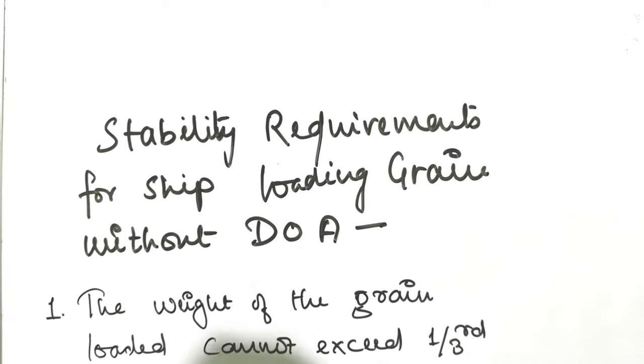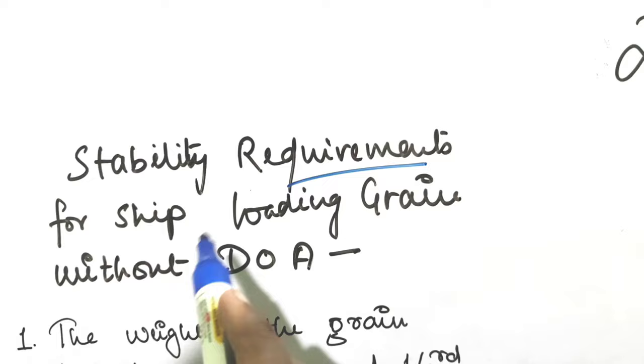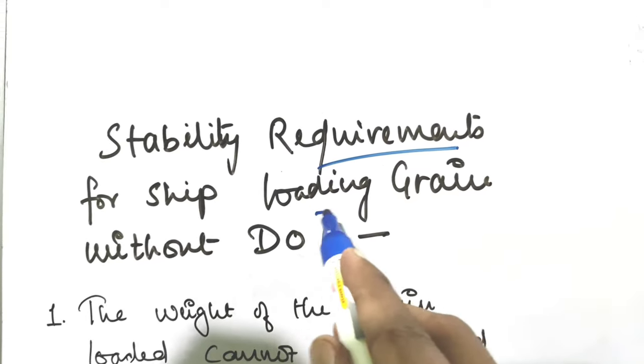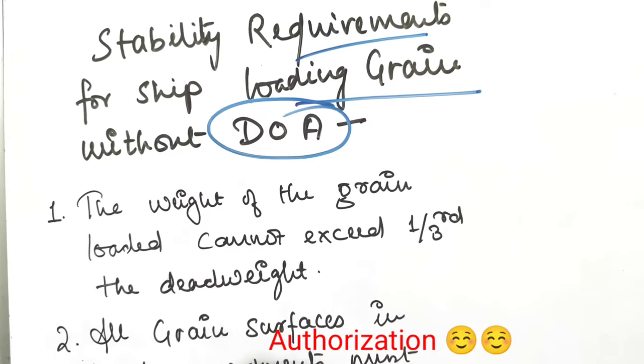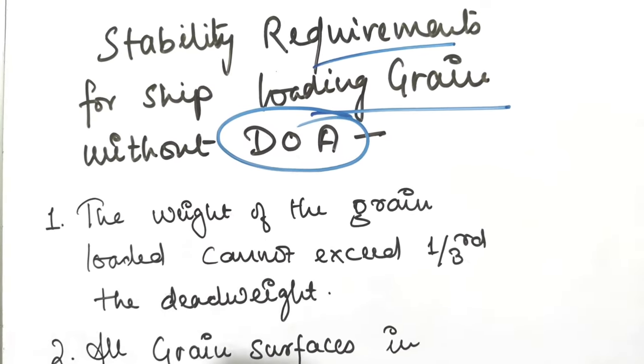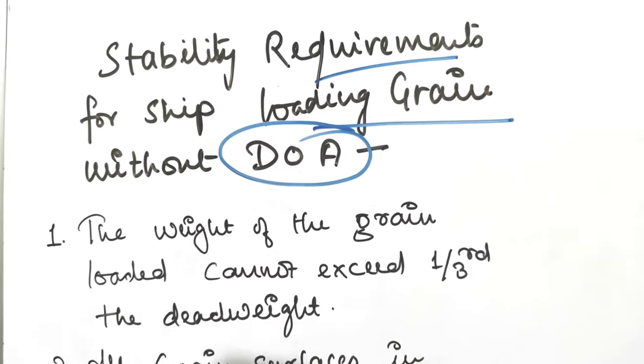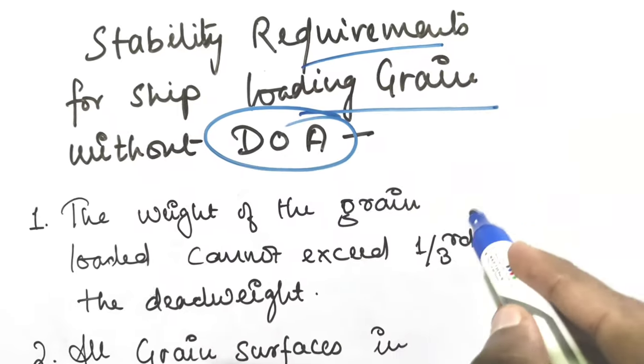Now, the stability requirements for ships loading grain without the Document of Authorization. There are basically five requirements and we will discuss all of them one by one. The weight of the grain loaded cannot exceed one-third of the deadweight, not displacement, the deadweight.